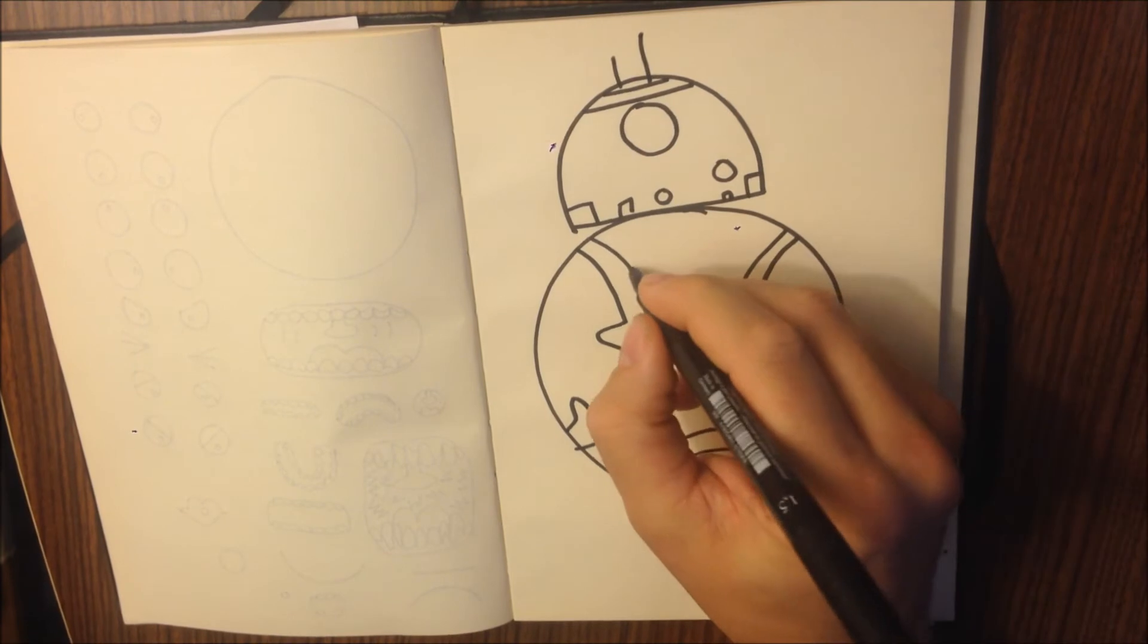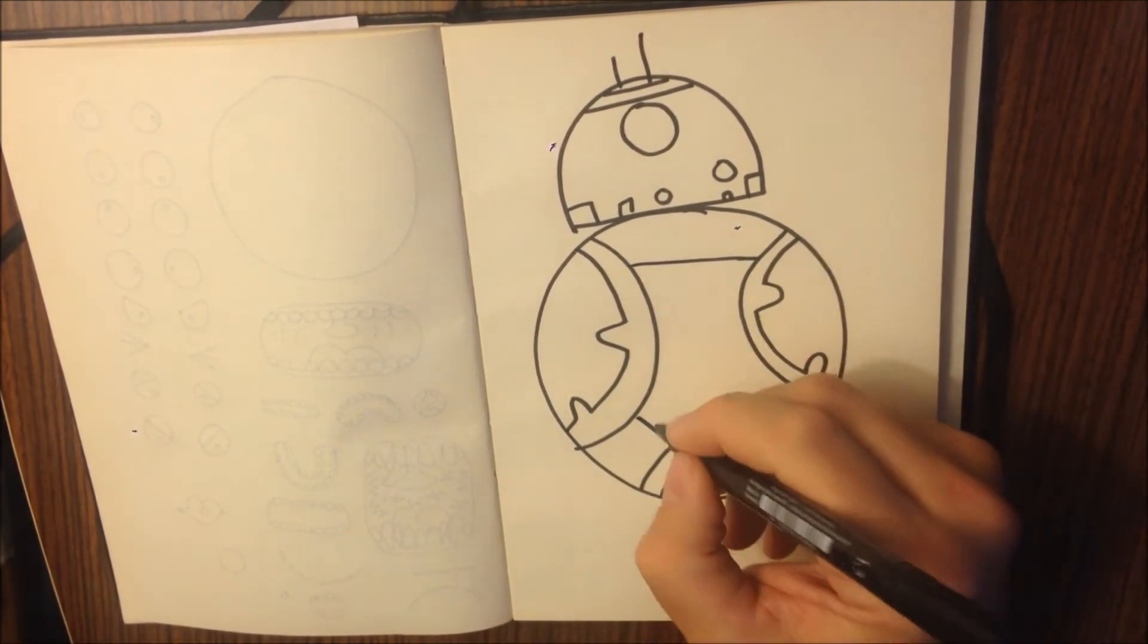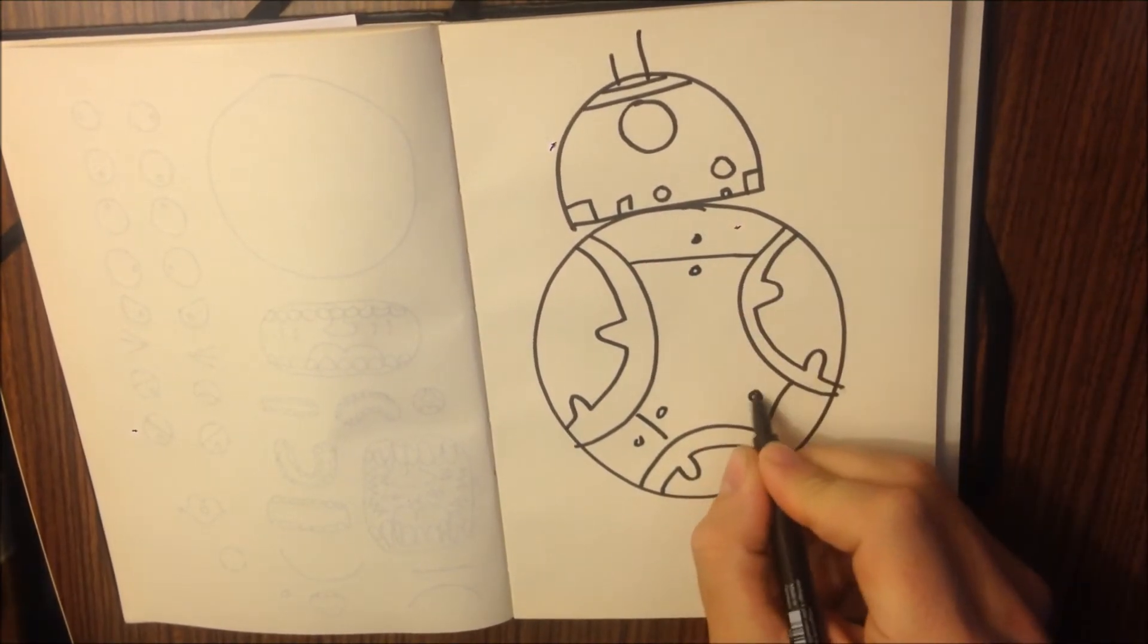Now the lines signify that he's a robot, because robots get put together in pieces.